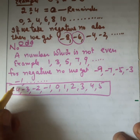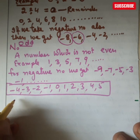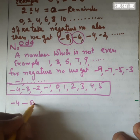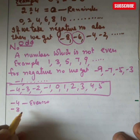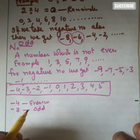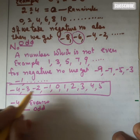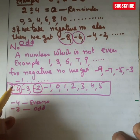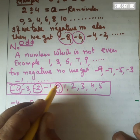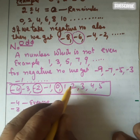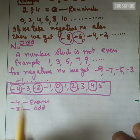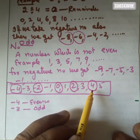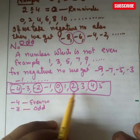First of all, we consider 4. We divide 4 by 2 and we get remainder 0, so 4 is an even number. Now divide 3 — you will get a remainder, so it is an odd number. Divide minus 2 — it also gives remainder 0, so minus 2 is also even. Zero is also even. 2 is also even. 4 is also even. These circled numbers are even numbers because they give no remainder when divided by 2.